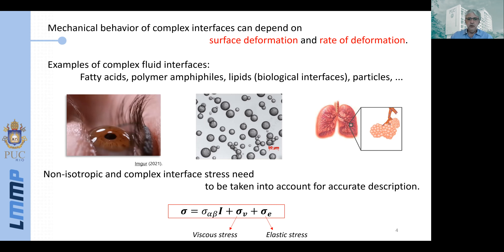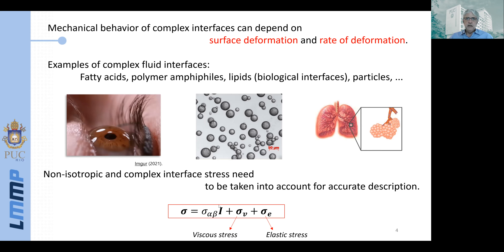As an example, the tear film in the eyes is stabilized by different proteins that create a very strong rheological behavior at the interface. Pickering emulsions are stabilized by the structure of particles on the interface, and the thin films that cover the lungs are also stabilized by different proteins that give rise to rheological behavior of the interface. If you have this complex liquid, the interfacial stress is no longer isotropic — it has a viscous component dependent on the rate of deformation and an elastic component proportional to the deformation itself.